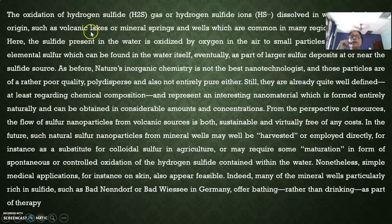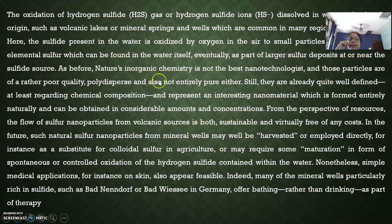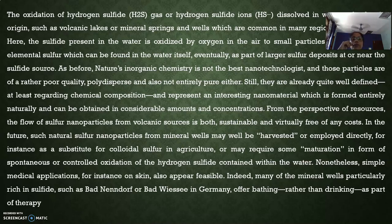Hydrogen sulfide gas (H₂S) and hydrogen sulfide ions, when they undergo oxidation in the presence of oxygen, lead to the formation of elemental sulfur in the nano range, found mostly in water and forming part of larger sulfur deposits. Sulfur nanoparticles are also produced from volcanic sources and are harvested for use as a substitute for colloidal sulfur in agriculture, or through controlled oxidation of hydrogen sulfide.